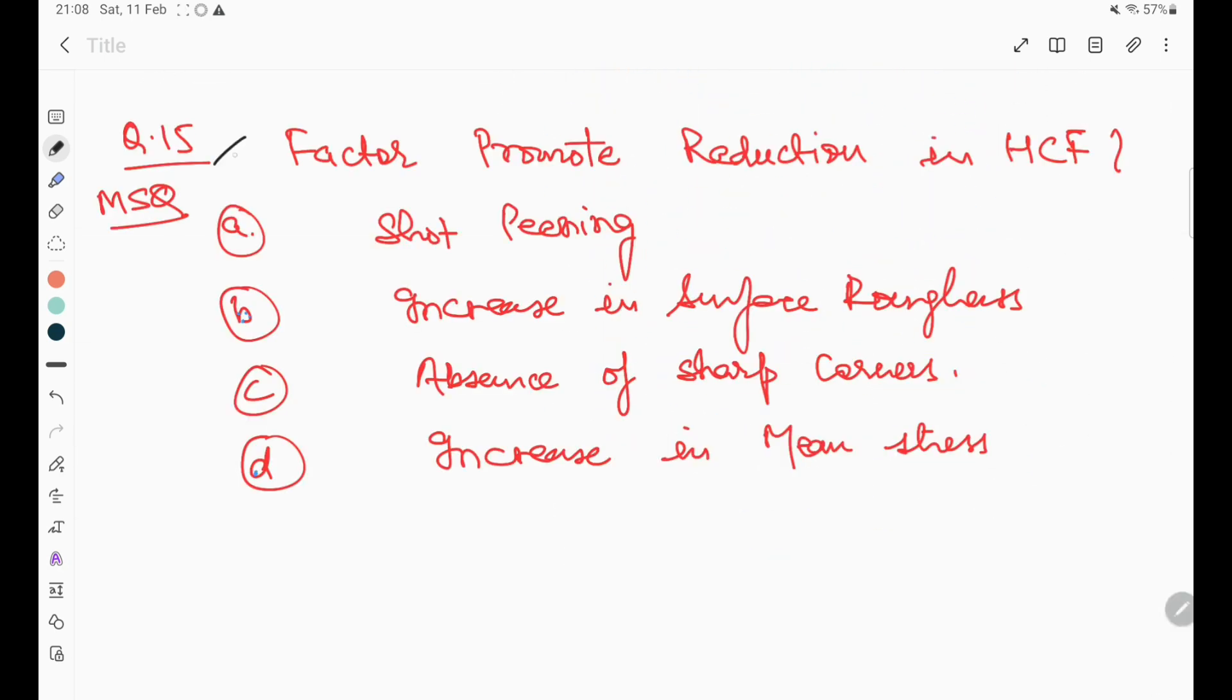The next question also has more than one answer. Factors that promote reduction in high cycle fatigue: short pinning will not promote the reduction, but increase in surface roughness will promote reduction in high cycle fatigue, and increase in mean stress will also promote reduction. So B and D are the right options. Options A and C are not the right answers.